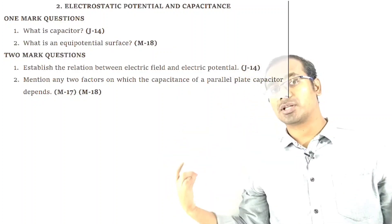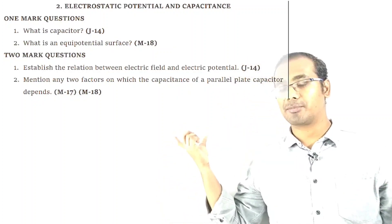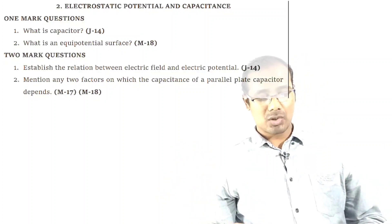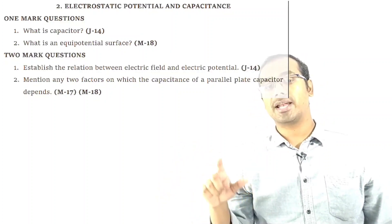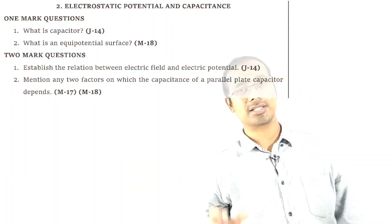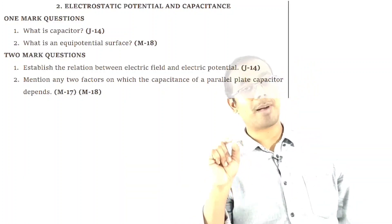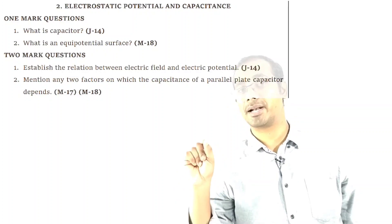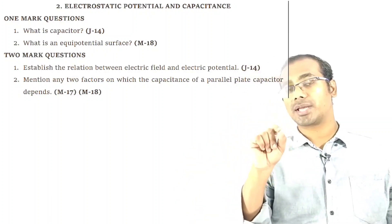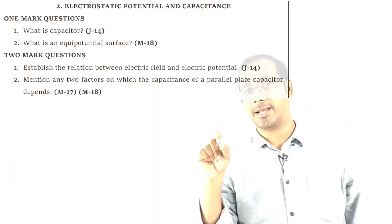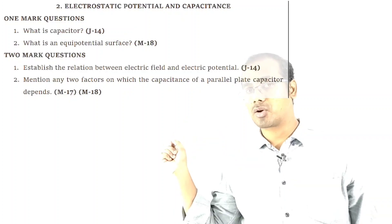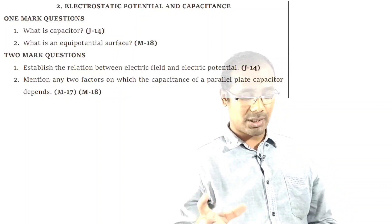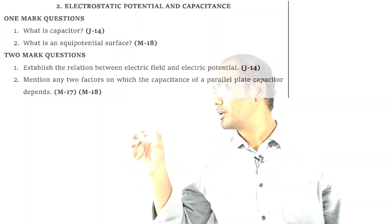That is 2 marks. The same question is also asked for 3 marks. Second important question: mention any two factors on which the capacitance of a parallel plate capacitor depends. The formula is C = ε₀A/d, so write the factors from that formula — 2 marks.